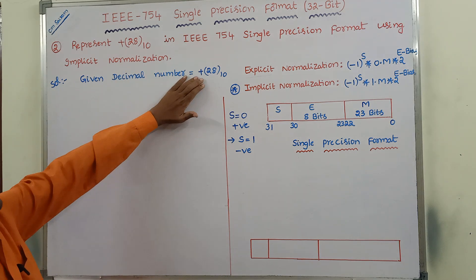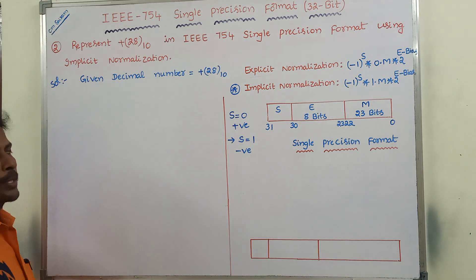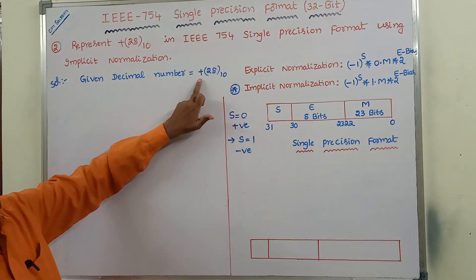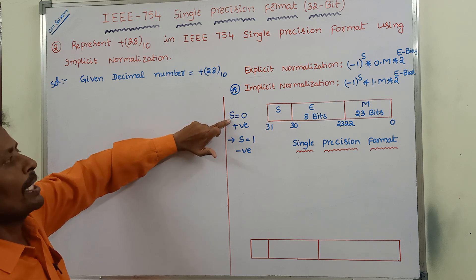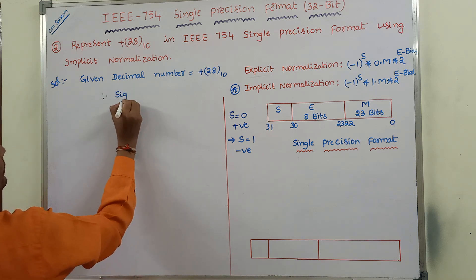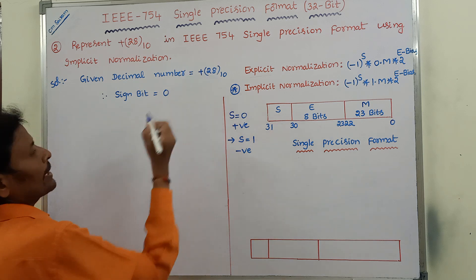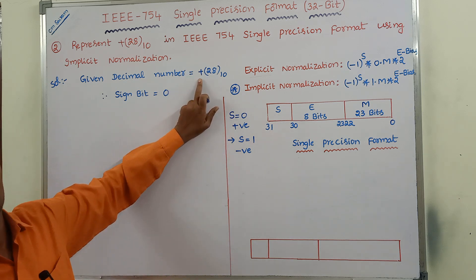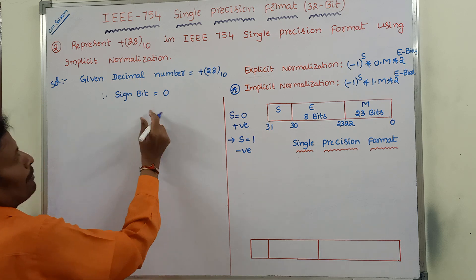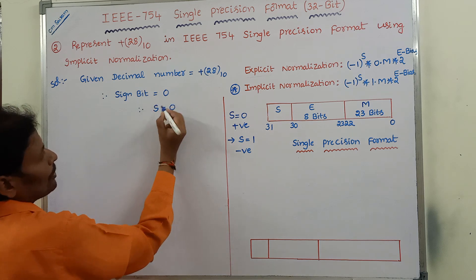The given decimal number is +28 base 10. Since the number is positive, the sign bit S is equal to 0. A positive decimal number occurs when the sign bit value is equal to 0. Therefore, S = 0.